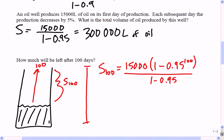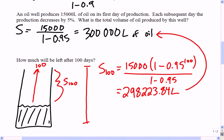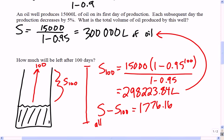After 100 days, the sum is nearly 300,000 — specifically 298,223.84. So after 100 days, most of the oil has been pumped out. We started with 300,000, so what's left over is 300,000 minus 298,223, giving 1,776.16 liters. That's not very much oil — it's probably not worth your cost at that point to keep working the well.